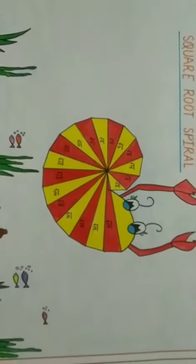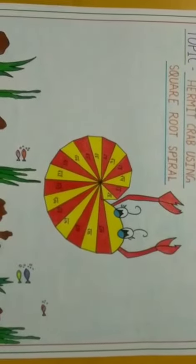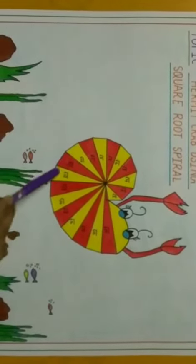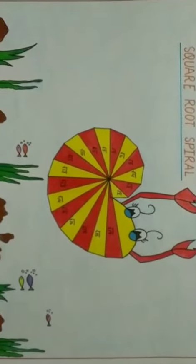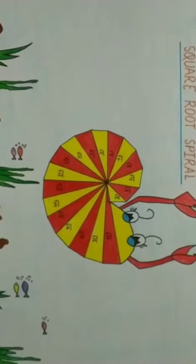It was said to be first constructed by Theodorus of Cyrene. In this project, I have made the square root sparrow up to root 19. Now, I will tell you how I have made this project.